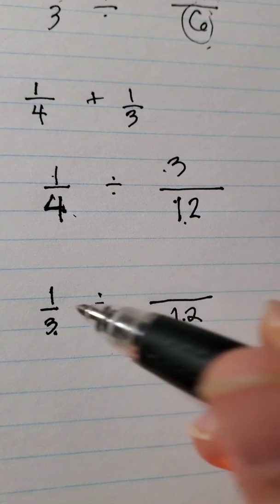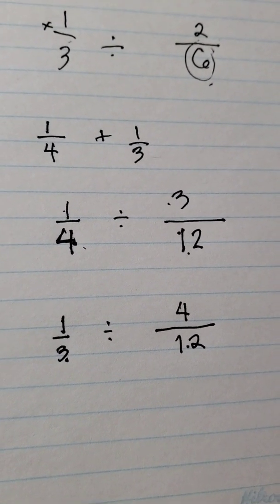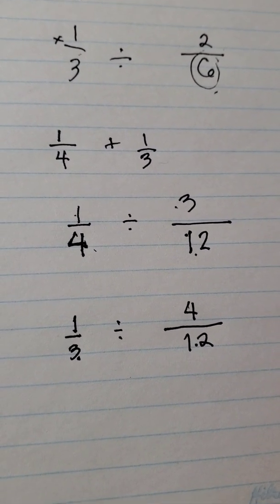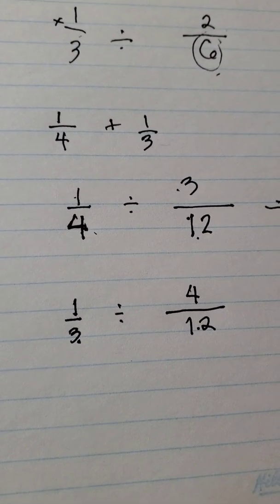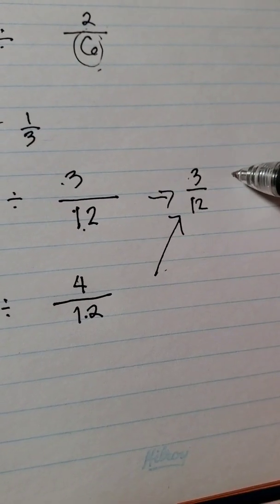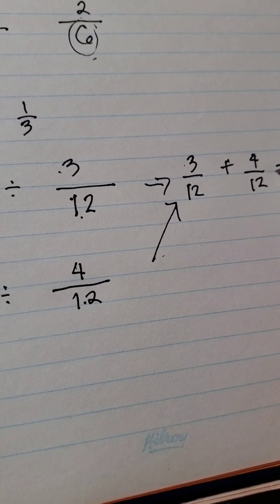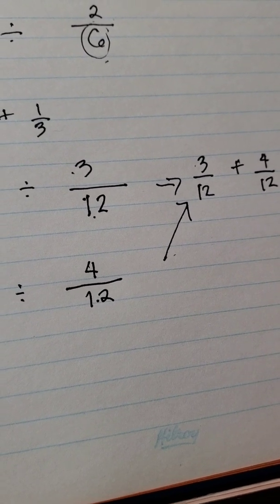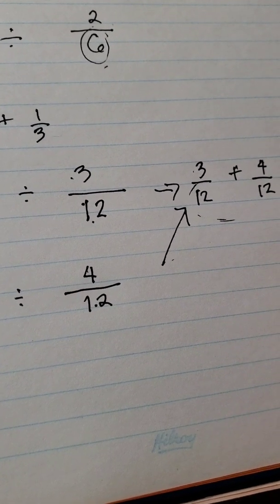12 divided by 3 is 4 times 1 is 4 over 12. Now you can add both fractions, so it's going to be 3 over 12 plus 4 over 12. 4 plus 3 equals 7, and you don't add the denominators, you just copy it.